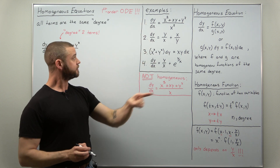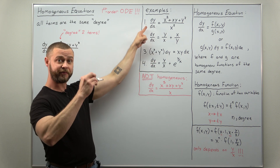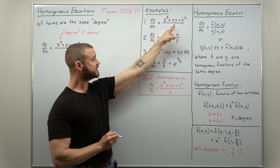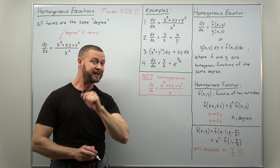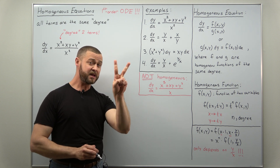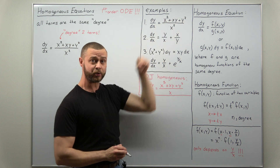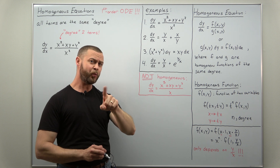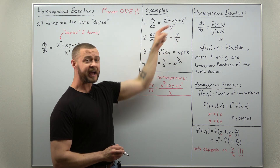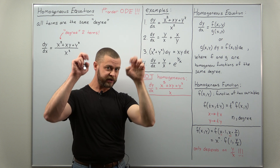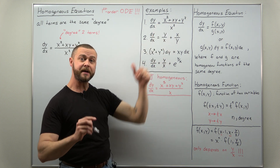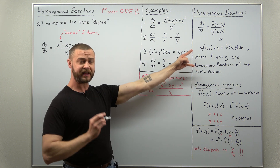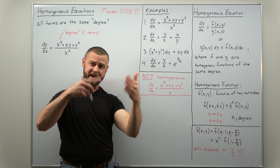Here are four examples. The first one is of the form: the derivative equals some combination of x and y, and all the x's and y's in the numerator and denominator seem to be each of degree two. You have x squared and y squared in the numerator and denominator. The xy term — both x and y are to the first power, so add them — the xy term is like a degree two term. So all the terms in the first example seem to be of the same degree. It's homogeneous.